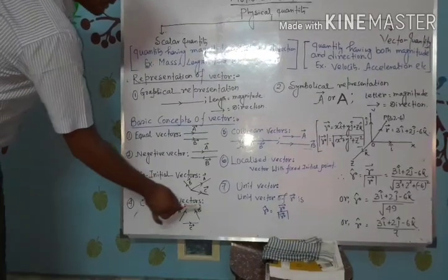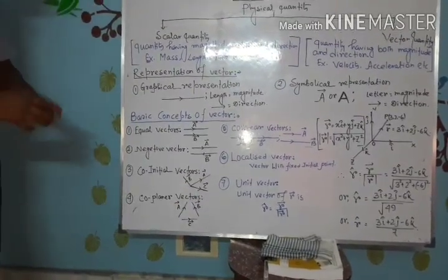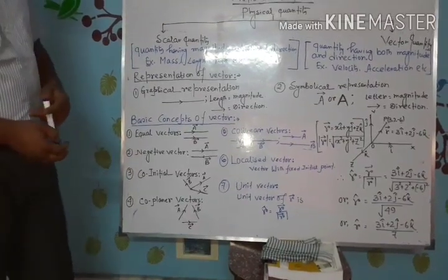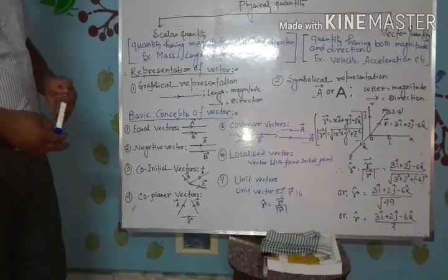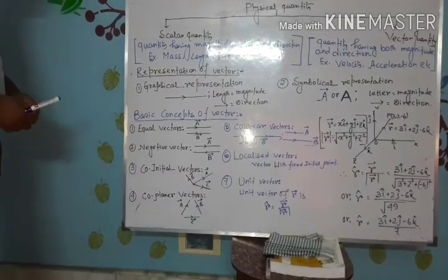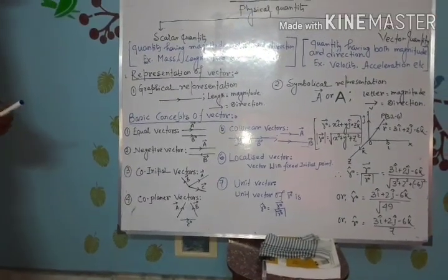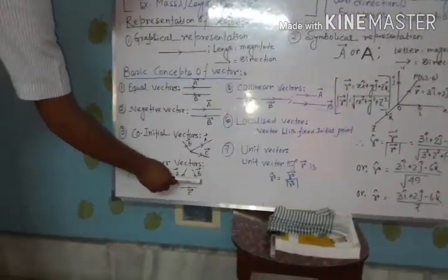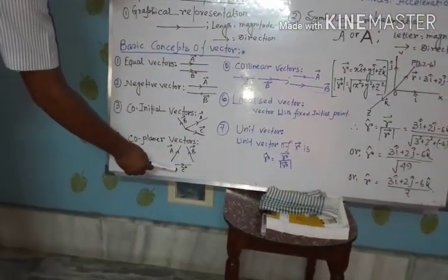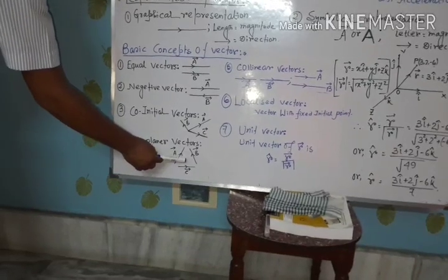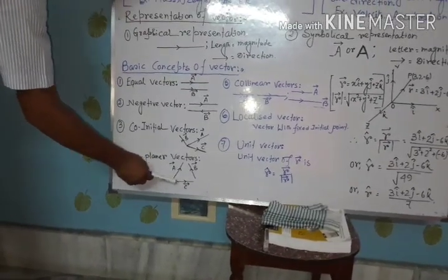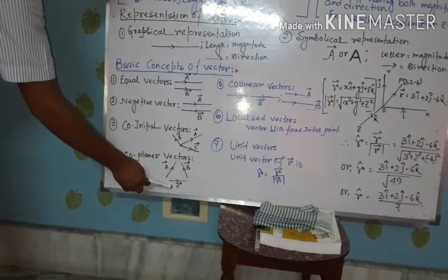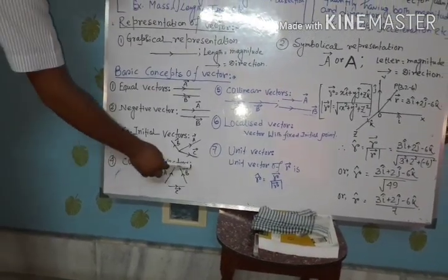Next: Co-Planar Vectors. Whenever any number of vectors, whatever may be their magnitude or direction, lie on the same plane, then the vectors are said to be Co-Planar Vectors. See the diagram — vectors A, B, and C have different directions and magnitudes, but they lie on the plane of this whiteboard. That's why these three vectors are Co-Planar Vectors.